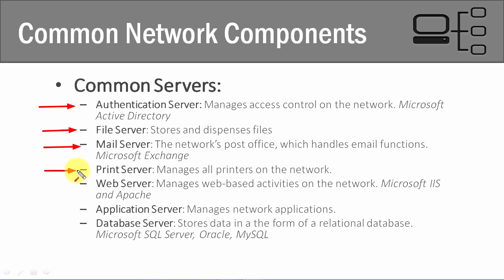The print server, again as the name implies, manages print jobs on the network if you need to print to one of the network printers. It gives different people and different resources higher or different priorities on different printers. A web server is used if you have a public website or an internal intranet set up for your company. Application servers host customized applications for your company — for example, accounting software or other business functions requiring a special application.